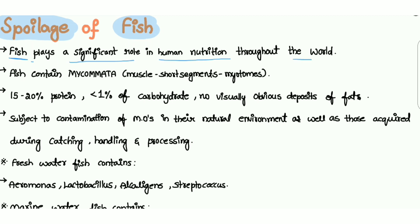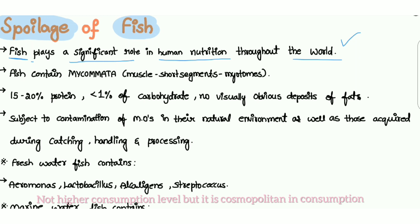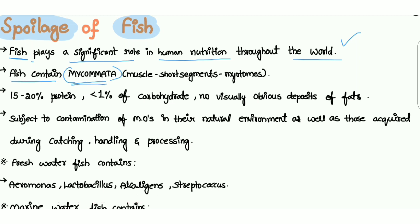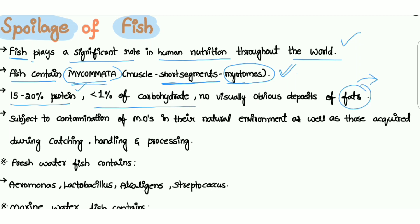Fish plays a significant role in human nutrition throughout the world and is consumed at higher consumption levels. Fish contains mycomata — these are the short segments of muscles called myotomes. Fish contains 15 to 20 percent protein and less than 1 percent carbohydrates, making it a protein-rich food.